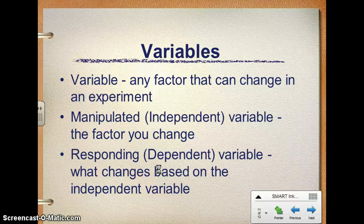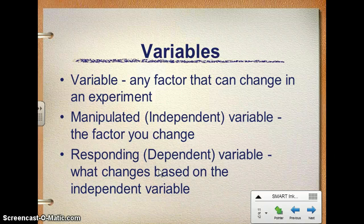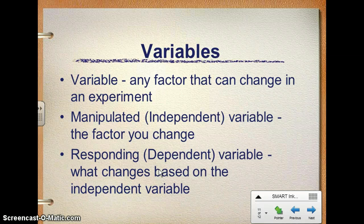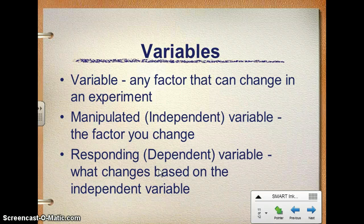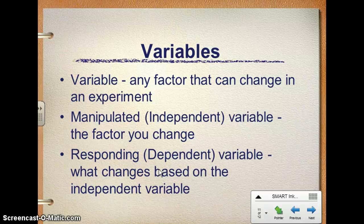You will need to write down this information about variables. A variable is a factor that can change in an experiment. It varies. The two types of variables that we're going to talk about extensively are independent and dependent, or manipulated and responding. Independent variable is the factor that the scientist is in control of, that you change. The dependent variable is what changes based on the independent variable. It depends on the independent variable. And then we also have lots of controls and controlled variables.